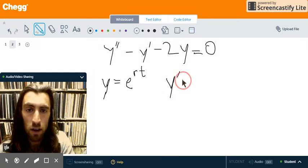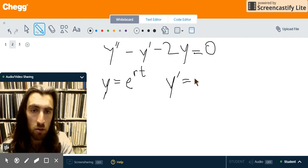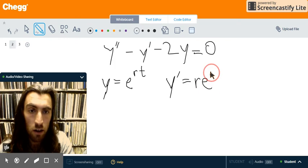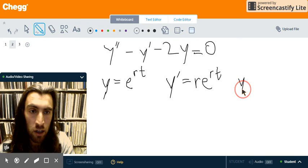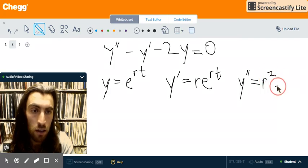In this case, y prime, just applying the exponential rule and the chain rule, we're going to get r e to the rt. And y prime, just bring out r again, and we get r squared e to the rt.